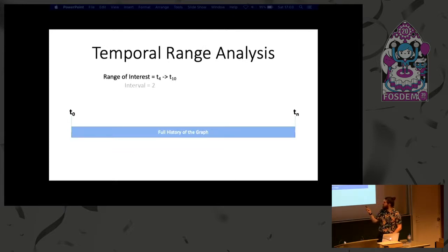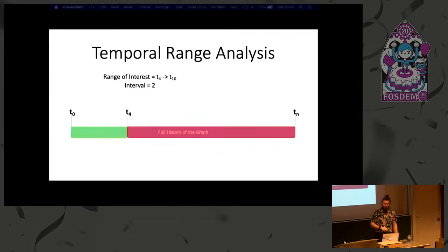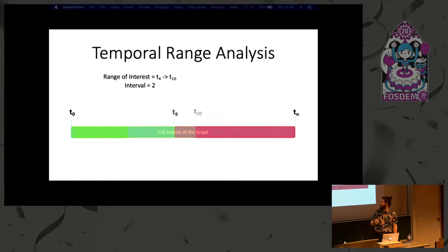As well as these individual views, you might say I'm interested in a range of time — over the last year — and I want to hop through at some set interval, maybe an hour or a day. You can do this: build a view at the oldest point, say time four, then hop forward to time six, time eight, and time ten. If you're doing these ranges, you can have all this windowing and window batching on top as well.